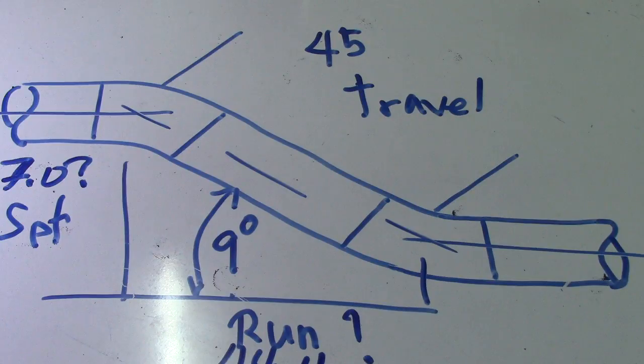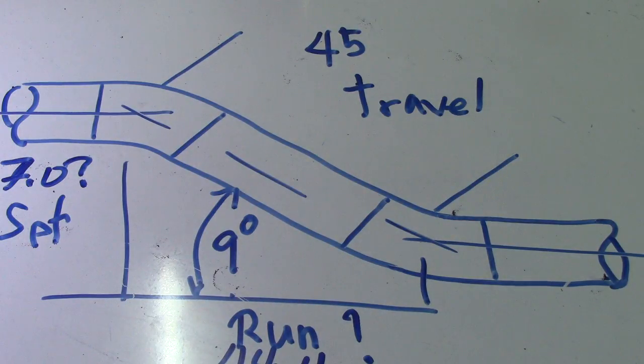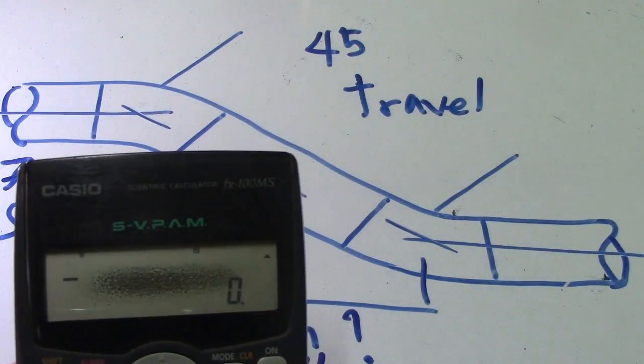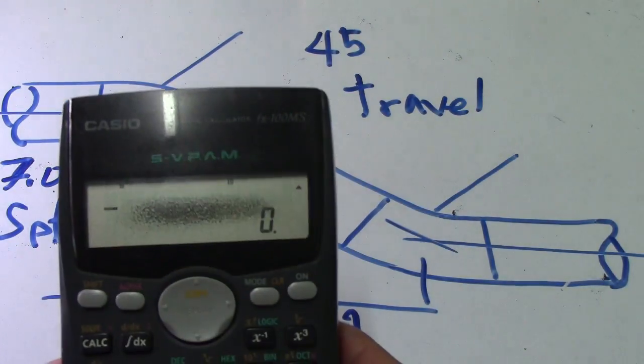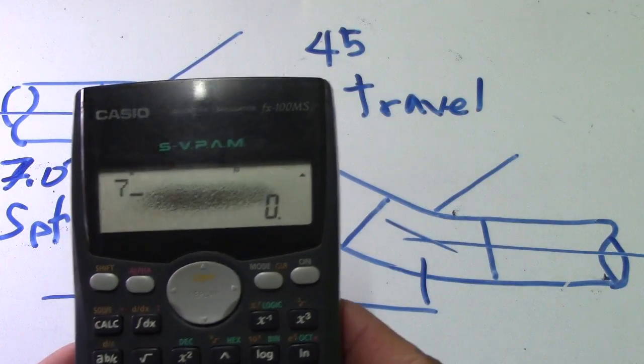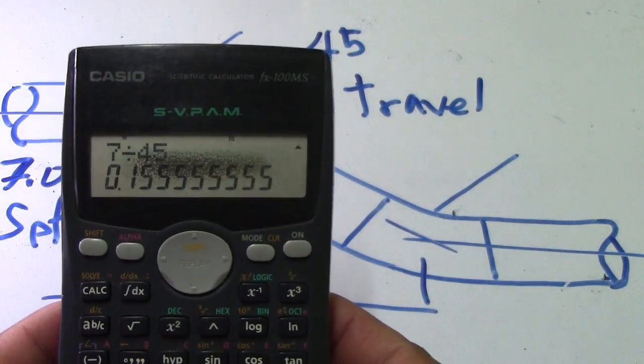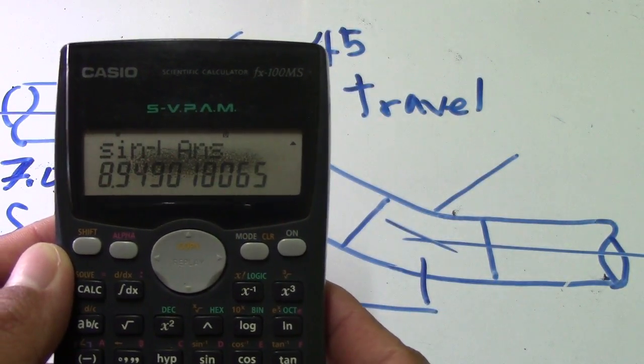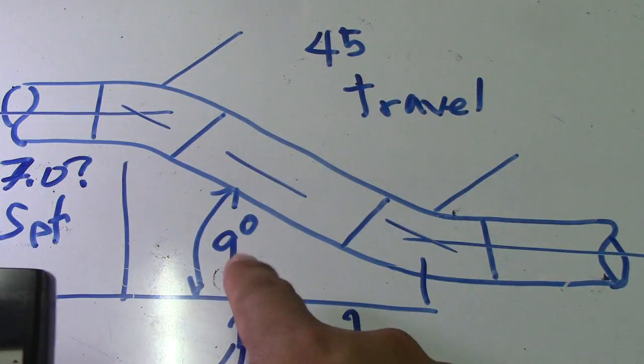Now we will check if our answer is correct. We will verify the 9 degrees. We will divide the set by the travel to find that. Our set is 7.07 divided by 45, equals... Press shift and sine.